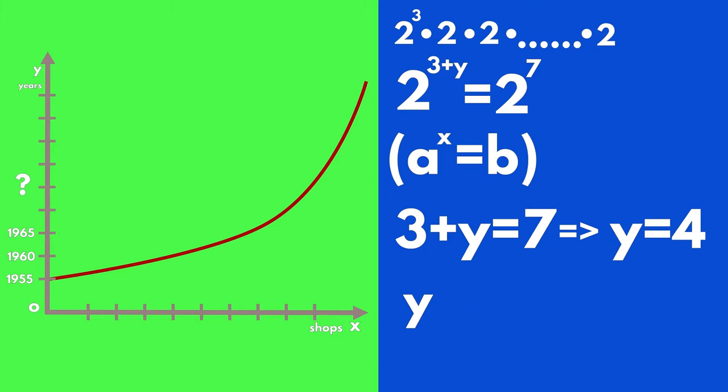Had you thought y is the year? You are close. In fact, y represents the number of 5-year periods from the original time, 1955, to the moment when the 128 stores were opened. To find out the year when 128 stores were opened, our initial problem, we have to make the following calculation.